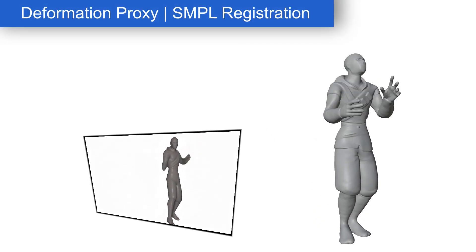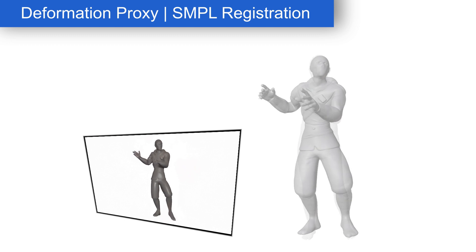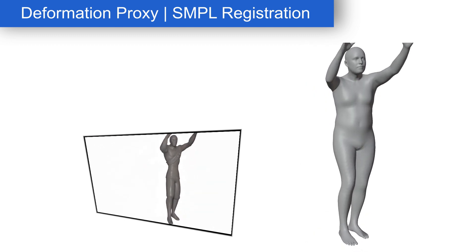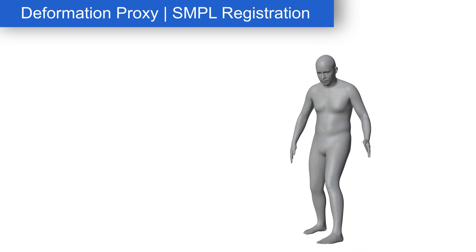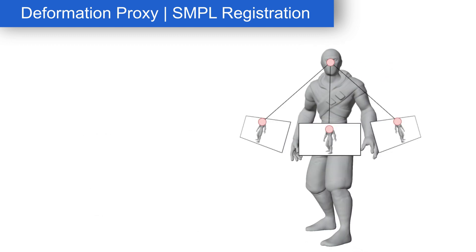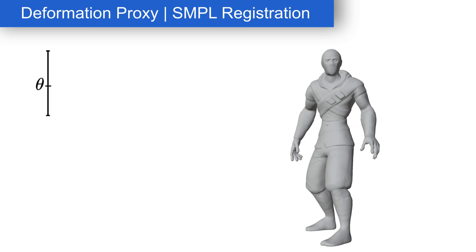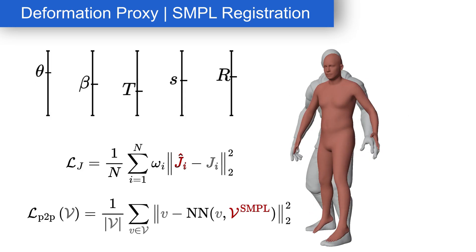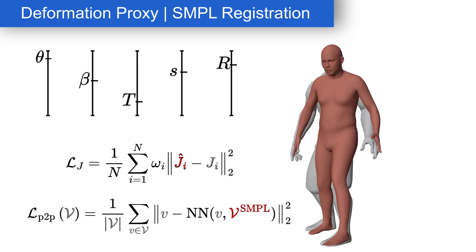In addition to these dense features, we incorporate a body prior and sparse keypoints using a SMPL body model as a deformation proxy. We optimize the pose, shape, translation, scale, and rotation of the SMPL model to align to the input mesh such that its joints best match detected 2D joint landmarks from multiple views.